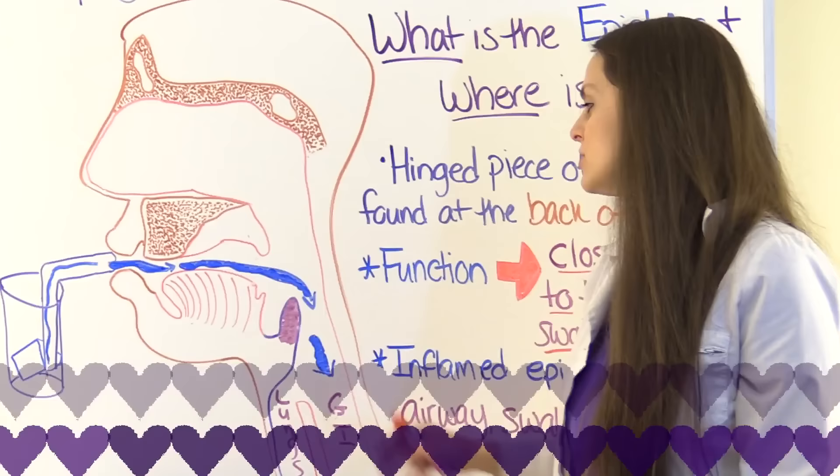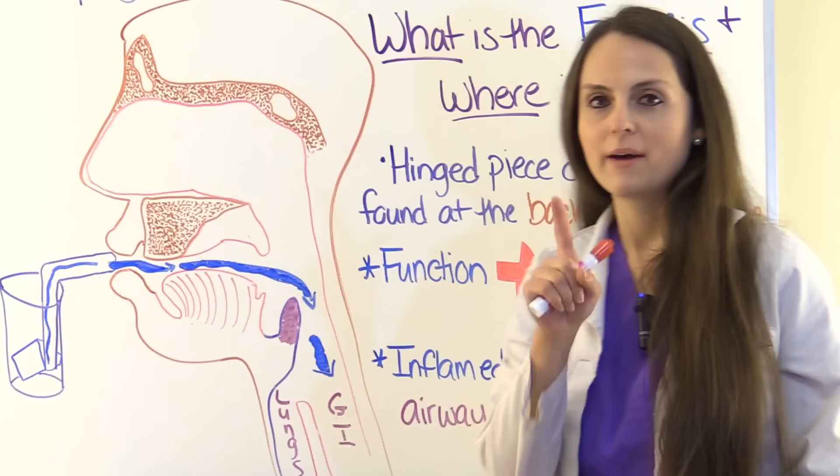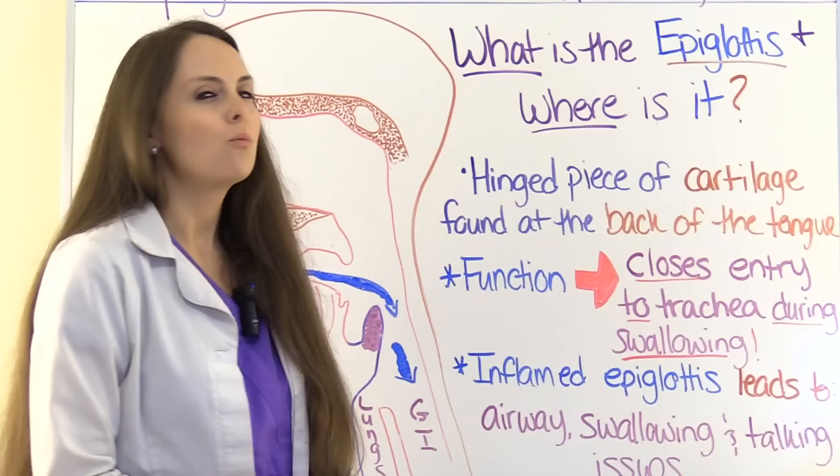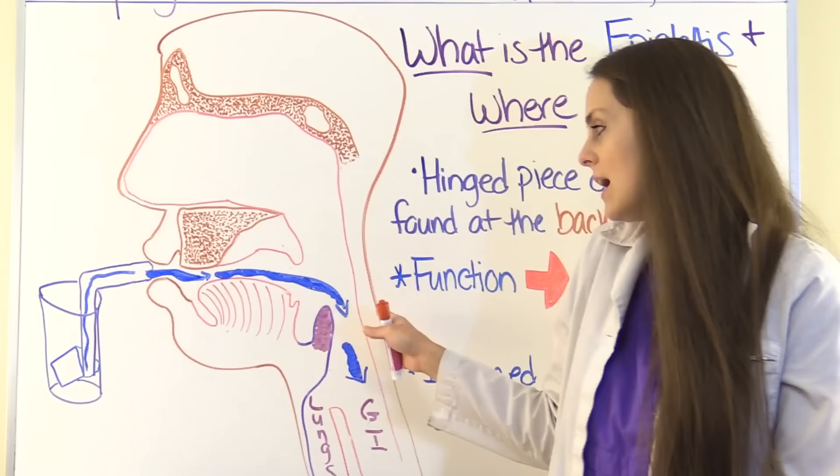When we're breathing, the epiglottis stays open, allowing air to flow in and out of the lungs. However, whenever it becomes inflamed, it can be a dangerous structure. If the epiglottis is so inflamed, we're going to have airway issues because it sits right within the airway and can block air from flowing downward due to swelling.